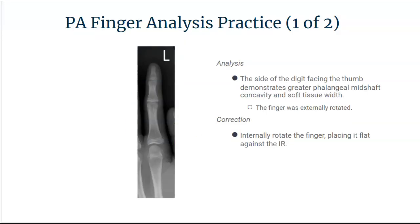In this first practice analysis, you can see that the concavity on one side of the finger is greater than the other side with the soft tissue. This means the finger was externally rotated. We need to internally rotate that finger, placing it flat against the IR, to get equal concavity on both sides of the finger for the soft tissue in order to get a true PA projection.